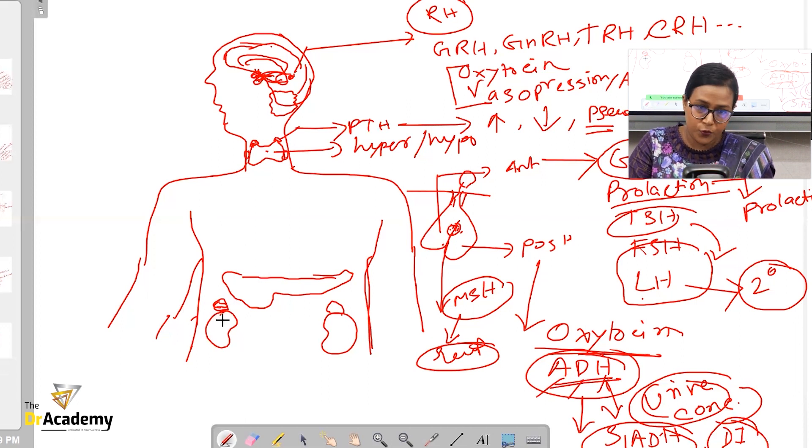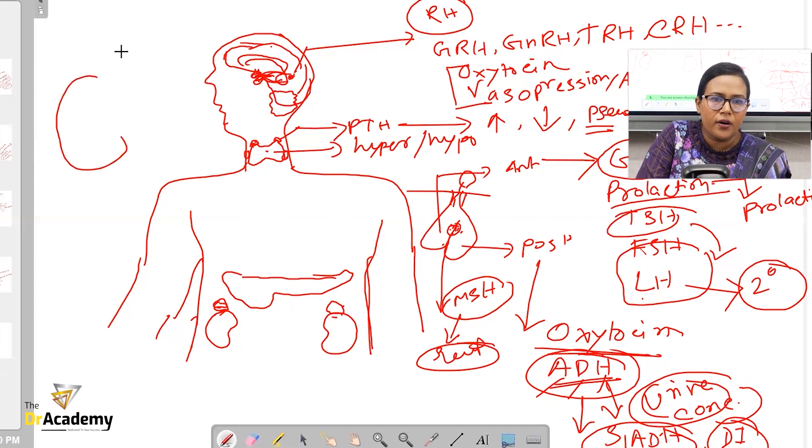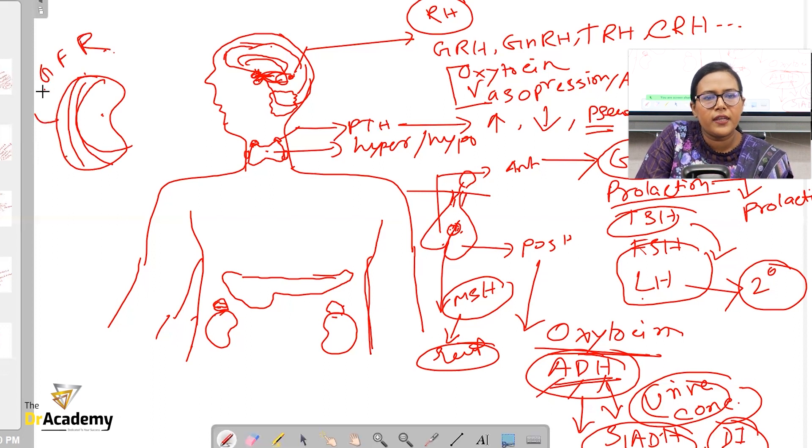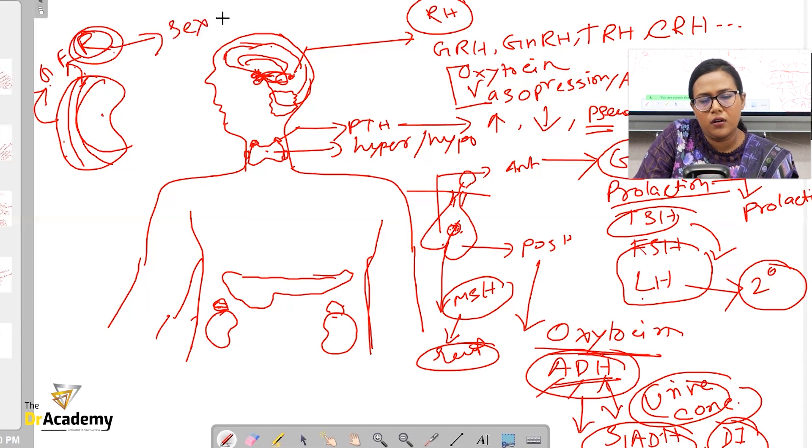There are two suprarenal glands, known as the adrenal glands, sitting on top of each kidney. If you divide the adrenal gland into two parts - cortex and medulla. From the cortex, we divide it into three parts, which you can remember as GFR. From the outermost layer comes the glucocorticoid. From the middle layer or fasciculata, and the innermost zona reticularis. So glucocorticoid, mineralocorticoid, and from the medulla comes sex corticosteroids.